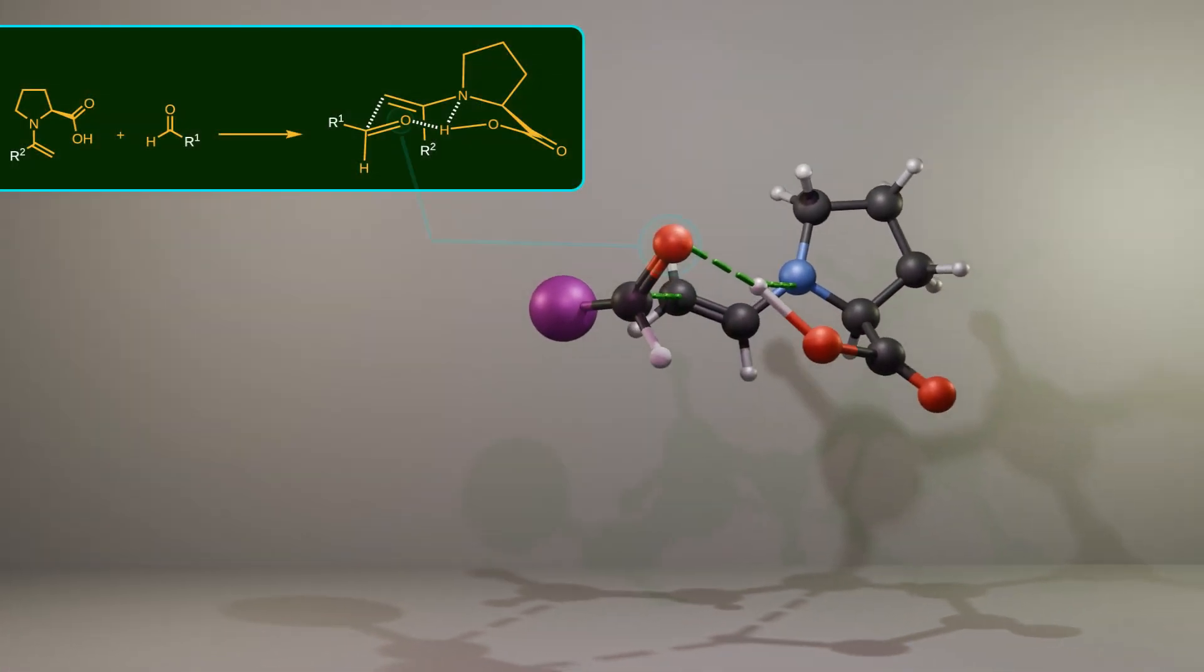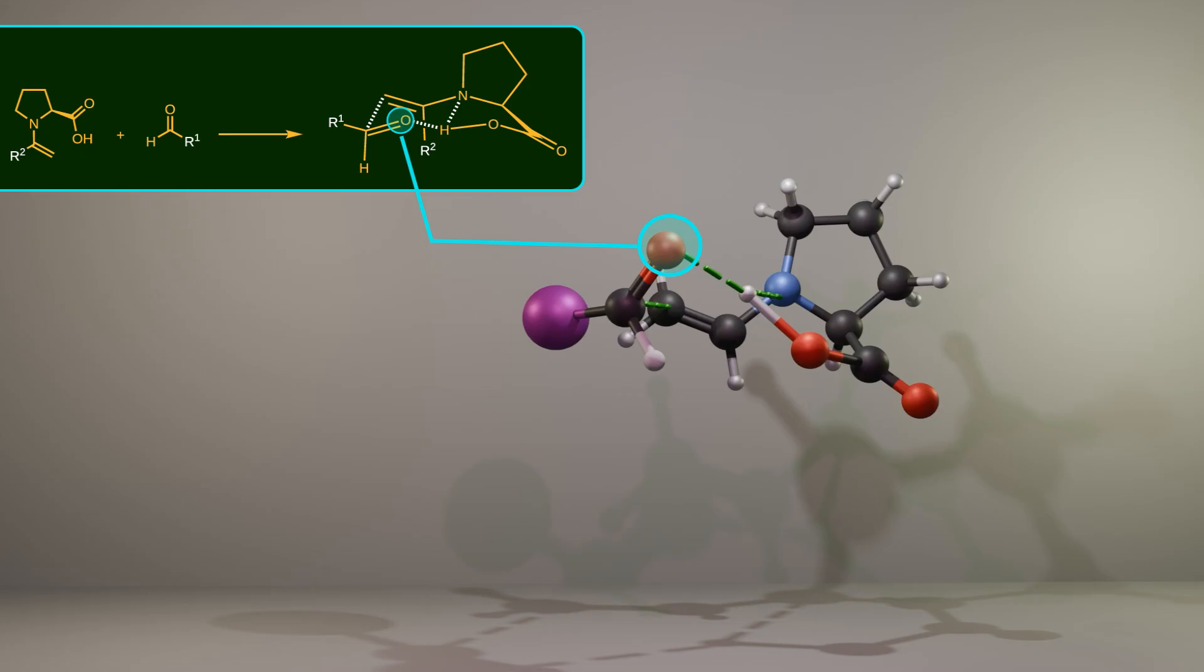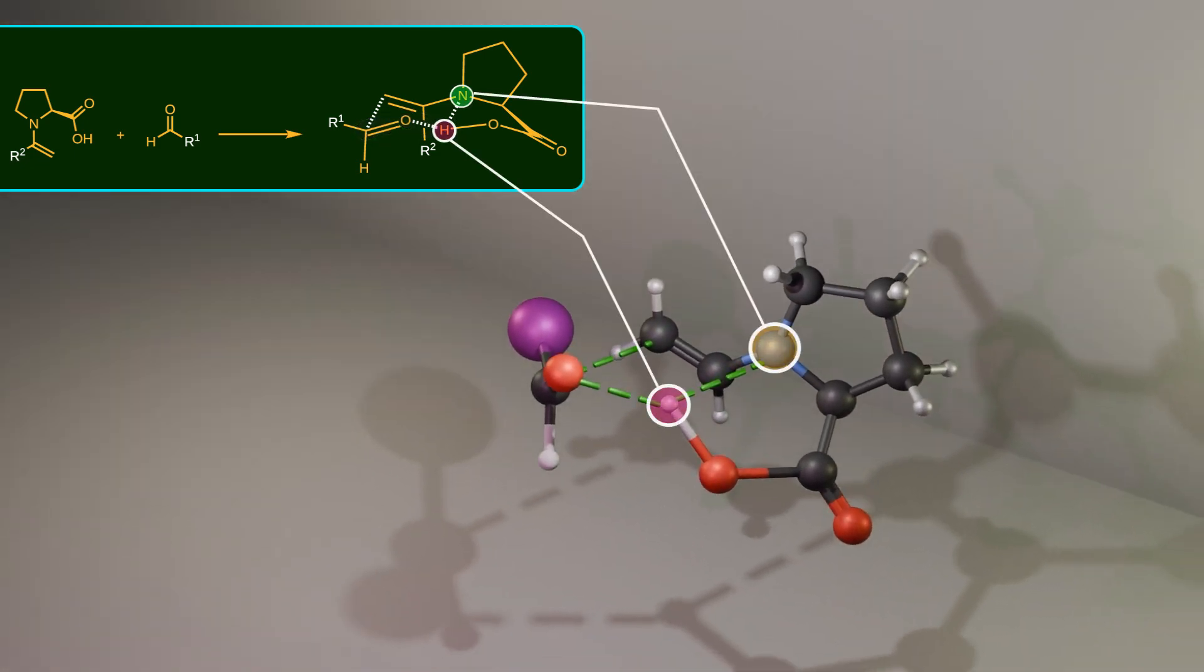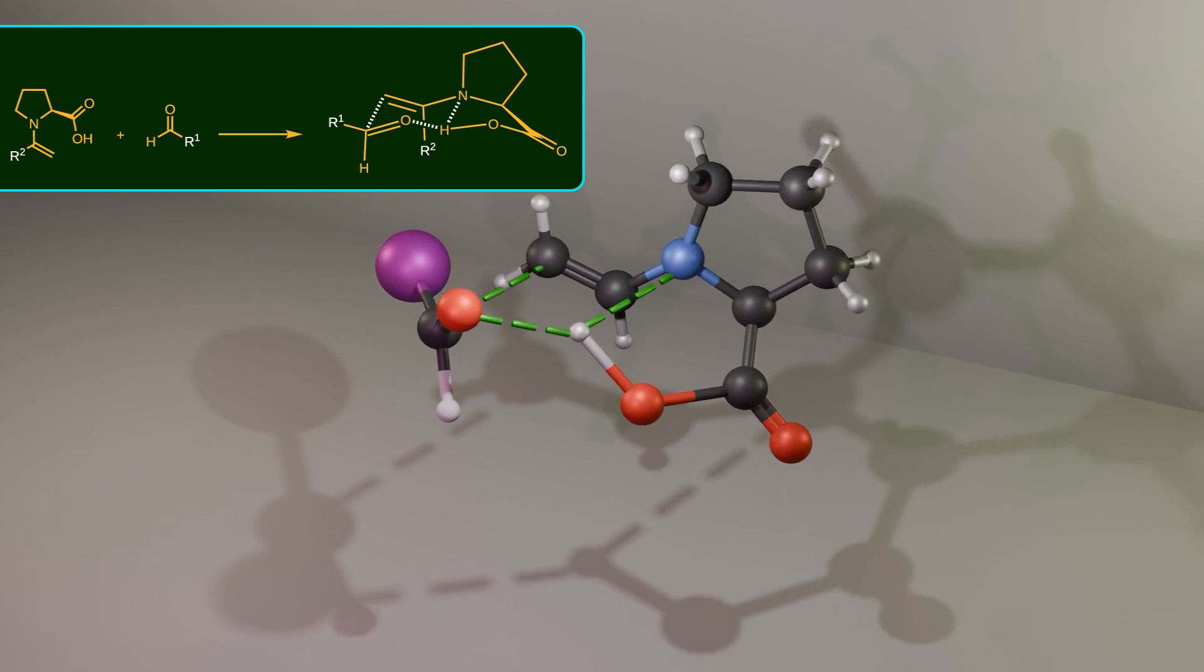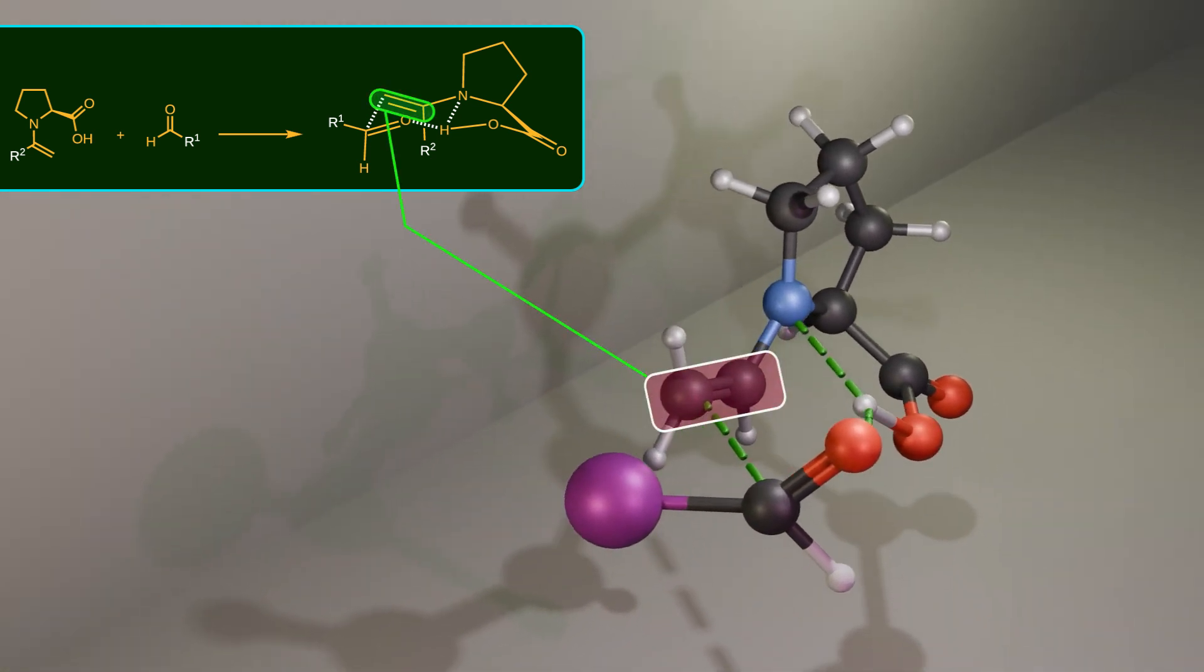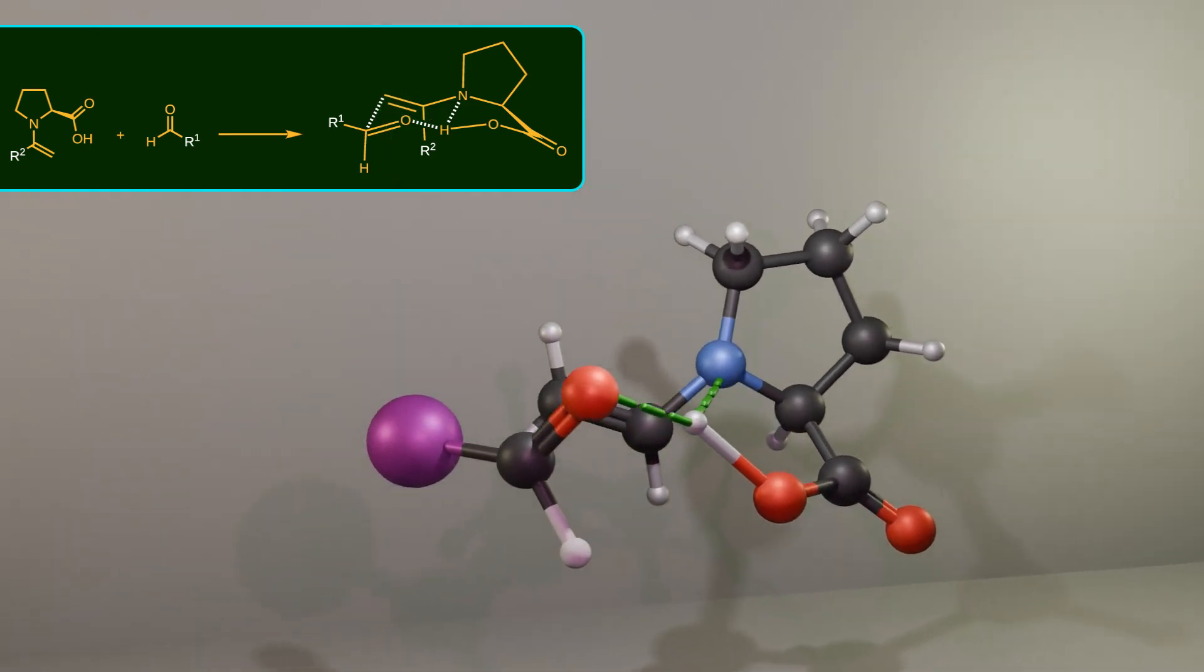The oxygen of the carbonyl group that's being attacked by amine interacts with this hydrogen of the carboxylic acid. This interaction forms the front side of the chair-like transition state. On the other side, the nitrogen atom of proline also interacts with this hydrogen. Here you can see the double bond that's about to attack the carbonyl group, but this attack can happen on only one face of the carbonyl.